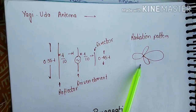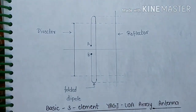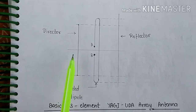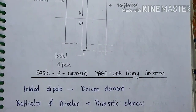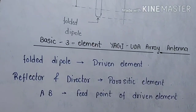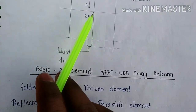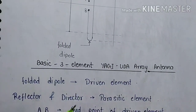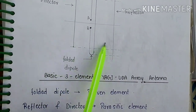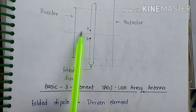Looking at the figure, we have the director, the folded dipole, and the reflector. Three key components come out: the folded dipole acts as the driven element, labeled A and B, which is the feed point from which current is fed. This is the Yagi-Uda antenna. The reflector and director are parasitic elements — parasitic elements are those to which no current is fed. At points A and B, we have the feed point of the driven element.